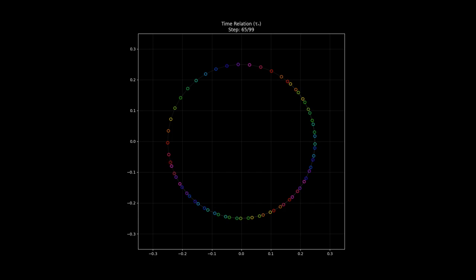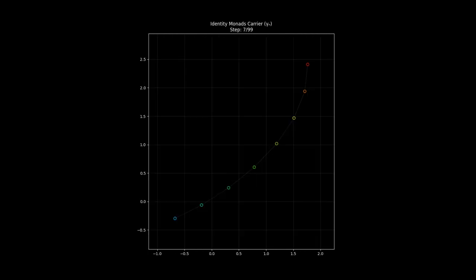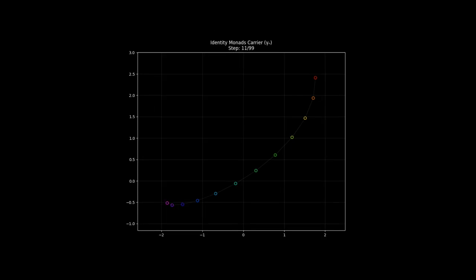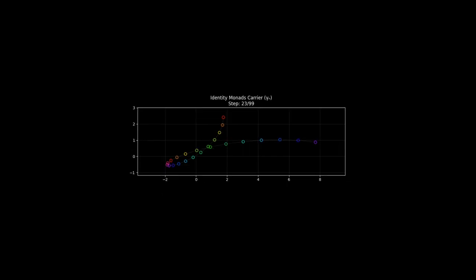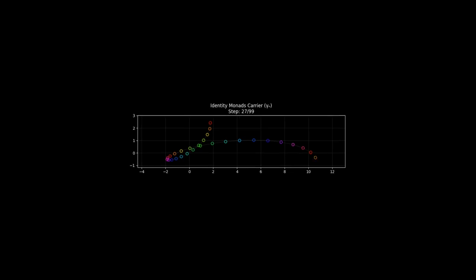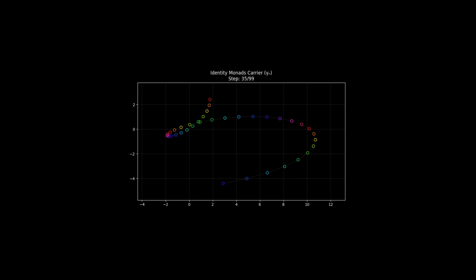One term jumped out at me: rotating histogram. I know a little something about histograms—those bar graphs that show how data is distributed—but how do you rotate a histogram? It's actually this really neat visualization technique. Imagine taking a regular bar graph, but instead of the bars going up and down, you wrap them around a circle, like spokes on a wheel. Each bar still represents how often something happens, but its position on the circle gives you even more information. The length of the spoke tells you the frequency, and the angle of that spoke relative to the center encodes another piece of data.